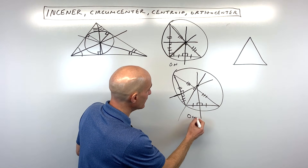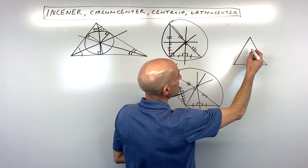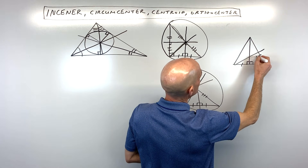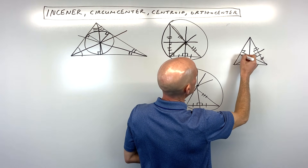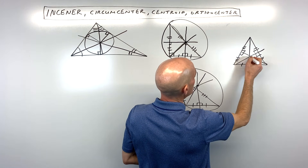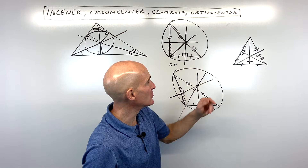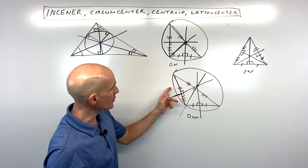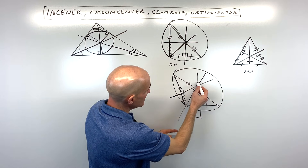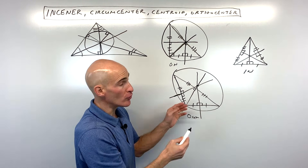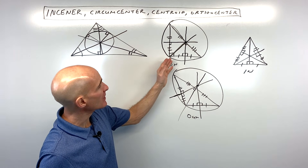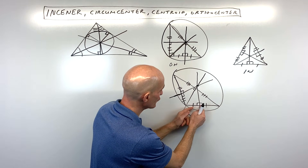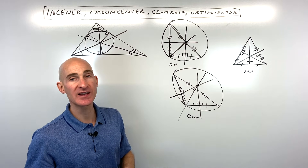For an acute triangle, where all the angles are less than 90, if we draw the three perpendicular bisectors, what you notice is that the point of concurrency — that circumcenter — lies inside the triangle. One thing to pay attention to is that the perpendicular bisector doesn't necessarily go through the opposite vertex. It just happened to in a couple of these triangles, but that's not always the case. You just want to make sure that you go through the midpoint of the side perpendicularly, and then where those three cross, that's going to be your circumcenter.